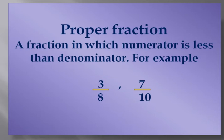First of all, we will learn about proper fraction. As you all know, a fraction has two parts: numerator and denominator. A fraction in which the numerator is less than the denominator is called a proper fraction. For example, 3 by 8 and 7 by 10. In both examples, you can see the numerator is less than the denominator.